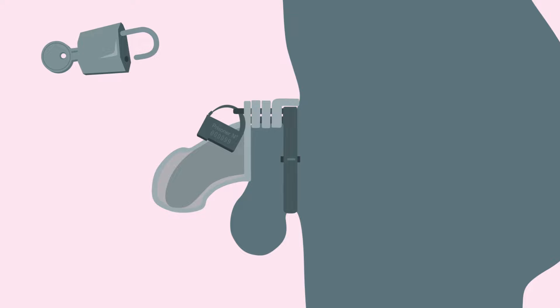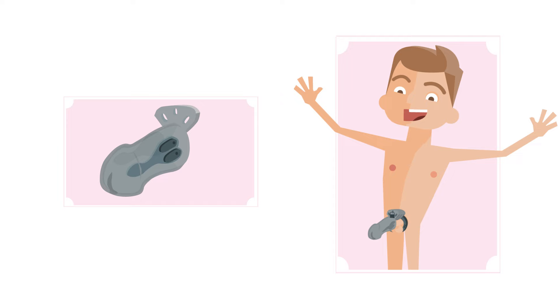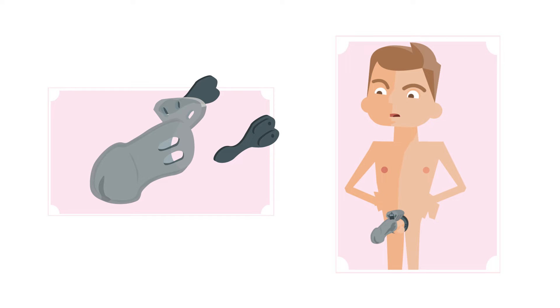Depending on how well-behaved your prisoner is, you can use the cock cage with or without electricity. To do so, you simply press the conductive silicone parts out before putting on the cage.